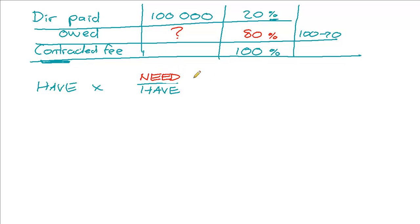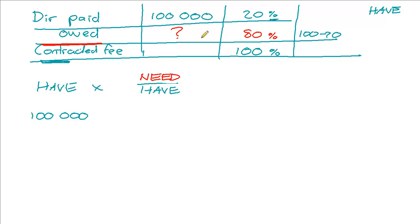The top part is what we need, and the bottom part is what we have. This figure comes from the actual figures given in the question. We were given 100,000 Rand that the director was paid, so 100,000 Rand is what we have. That 100,000 Rand represents the director's fees paid — the portion that we actually have. The portion that we need, however, is the fees owed to the director. So we've got the portion paid; we need the portion owed.